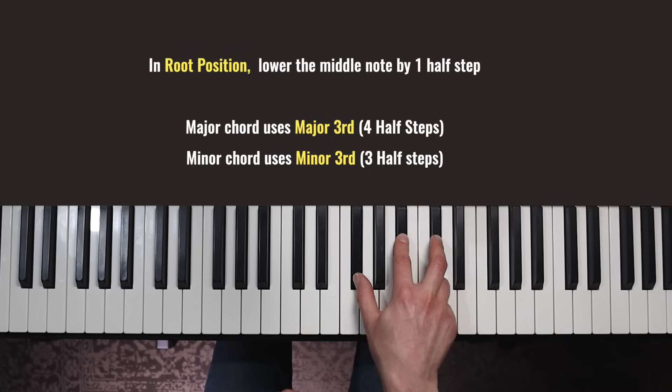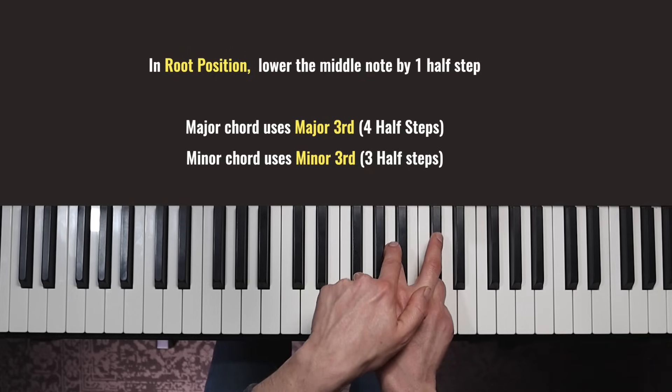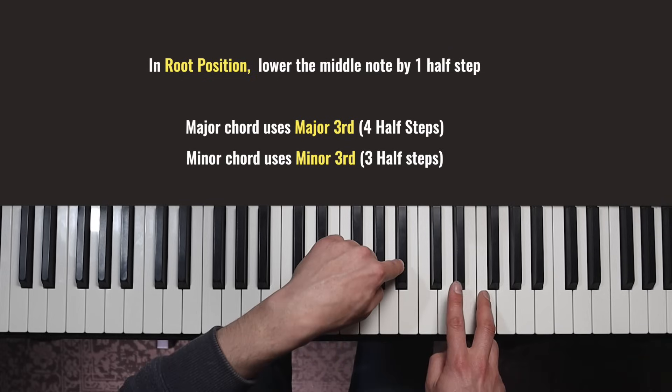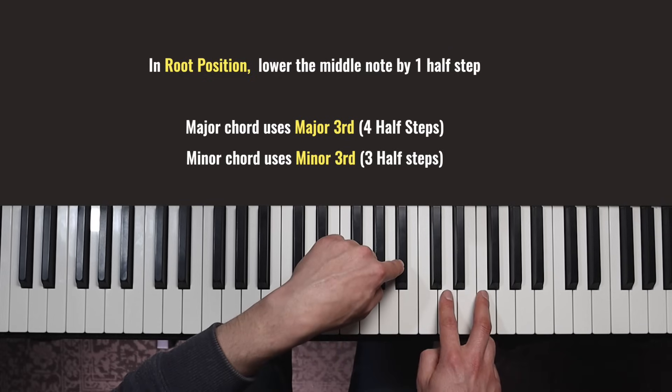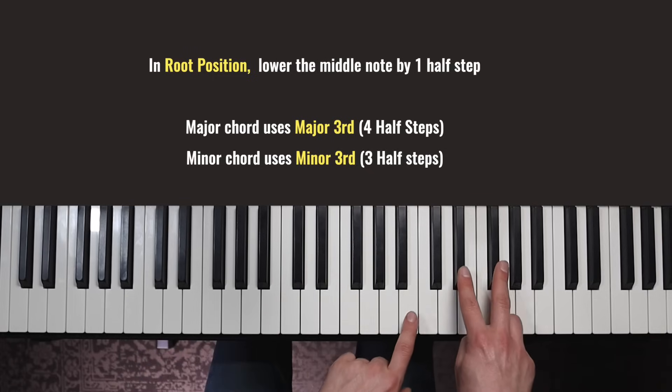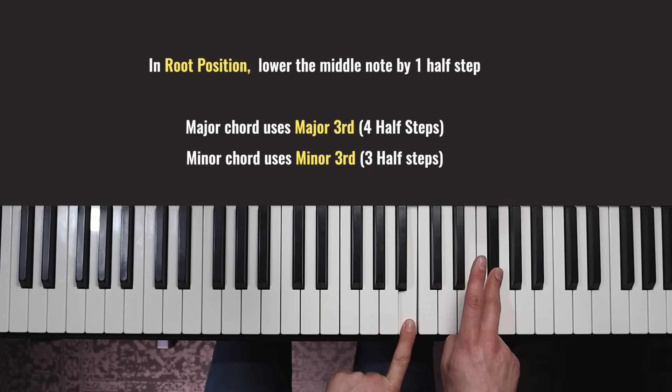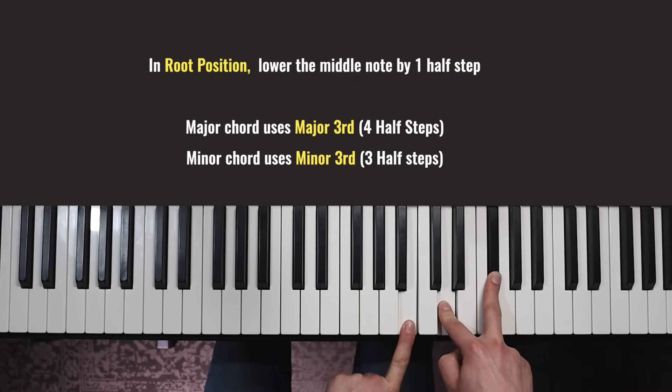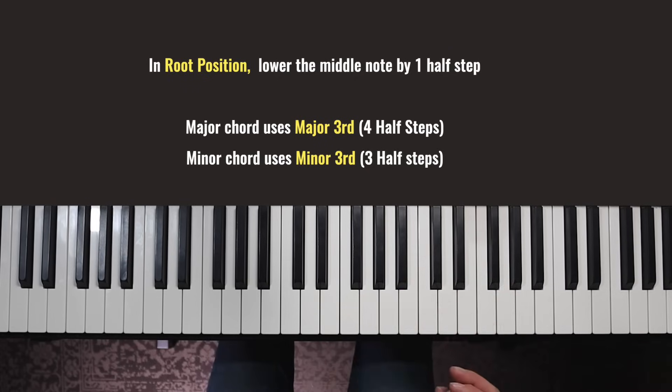And the last group then, G flat major goes from all black keys to black, white, black, if we put that third down a half step. B flat minor looks like this if we convert major, put the third down a half step. And B major was like this, if we convert that to minor, move the third down a half step. So we've got a couple of random shapes again then.